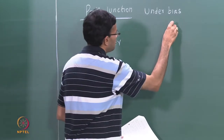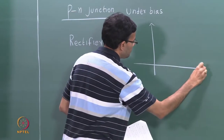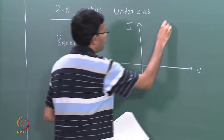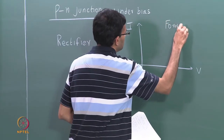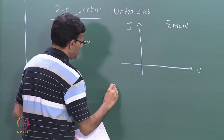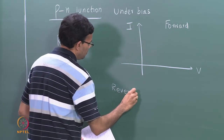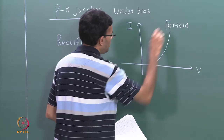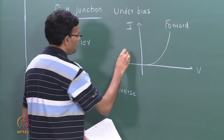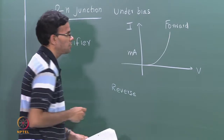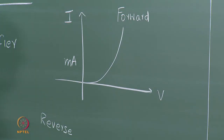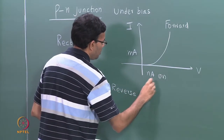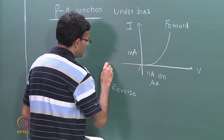If you were to plot I versus V, the first quadrant is the forward bias and the other is the reverse. We found that in the case of forward bias, the current goes exponentially as the voltage. A typical value of current is around milliamps, while in reverse bias we have a really small current of the order of nanoamps or microamps, and that is essentially constant.